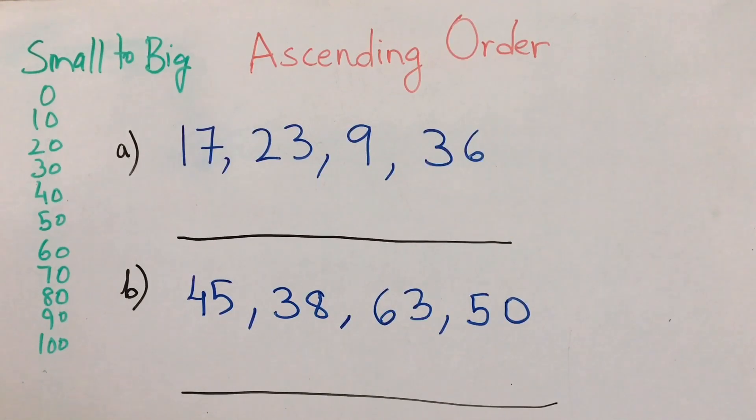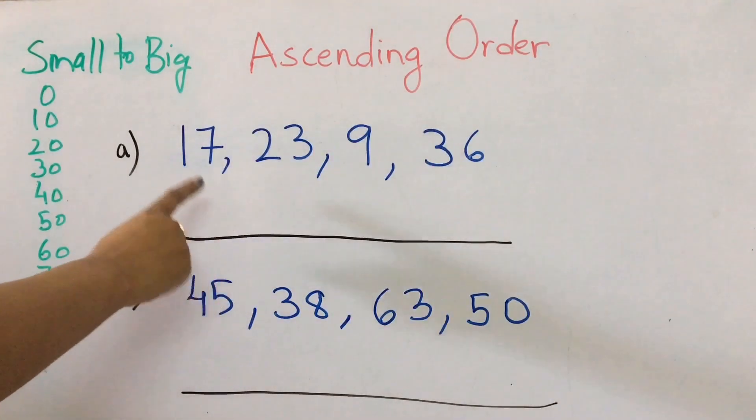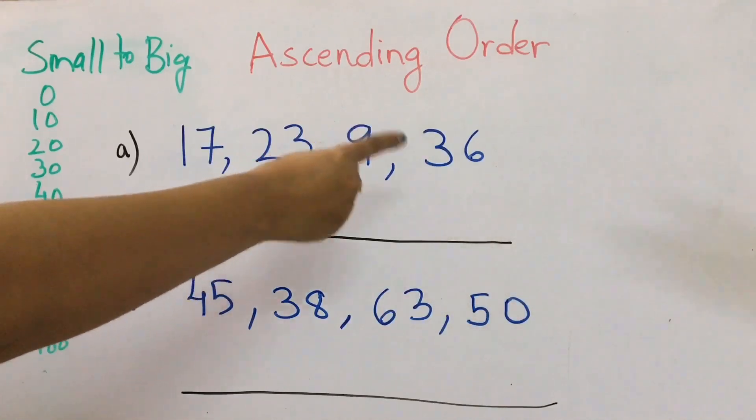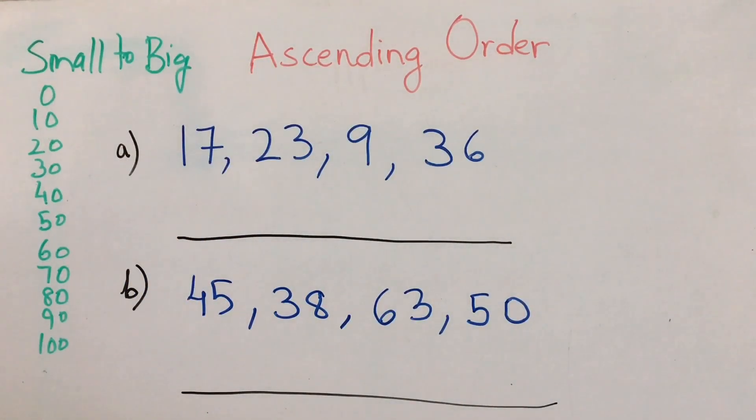I think in class 1 or class 2 you'll have ascending order, so how to teach your kids ascending order. First I've given you four numbers: 17, 23, 9, and 36. Now we have to see.